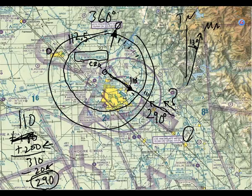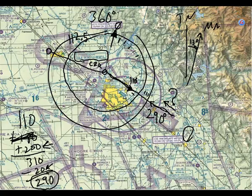If there's no wind, I would fly right to that transmitter. Then if I wanted to fly directly to Madera, I'd look at where that line intersects the compass rose — it's probably about 285.